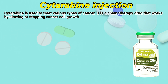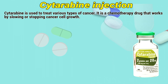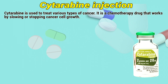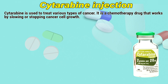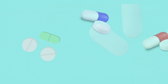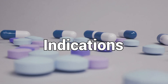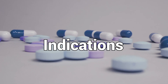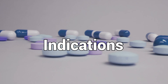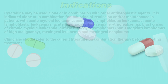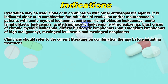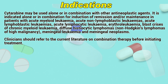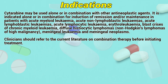Cytarabine is used to treat various types of cancer. It is a chemotherapy drug that works by slowing or stopping cancer cell growth. Indications: Cytarabine may be used alone or in combination with other antineoplastic agents.